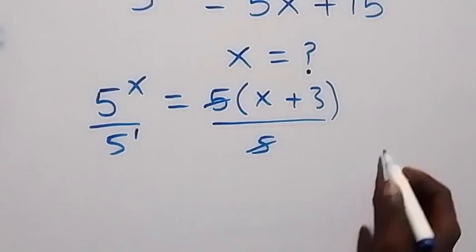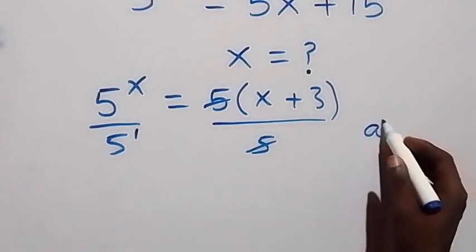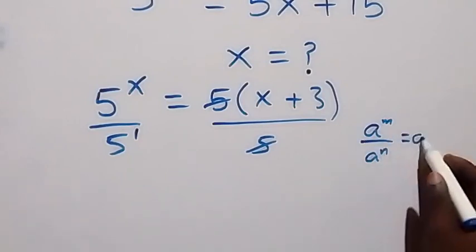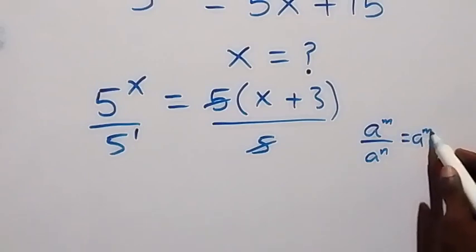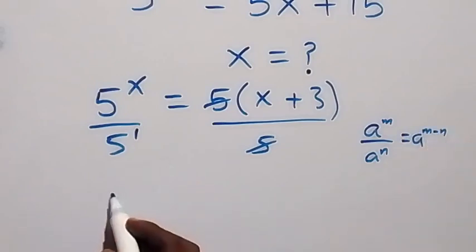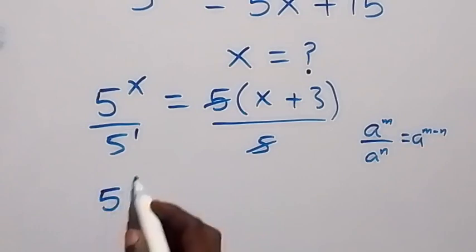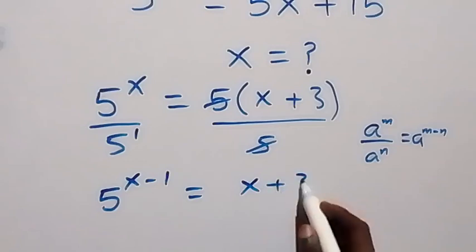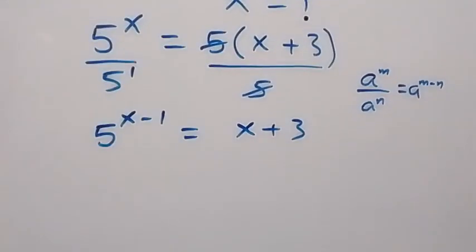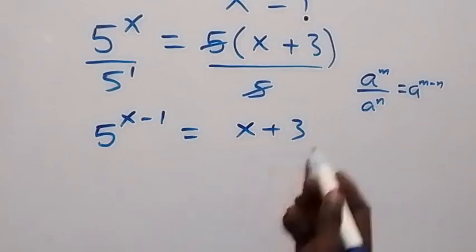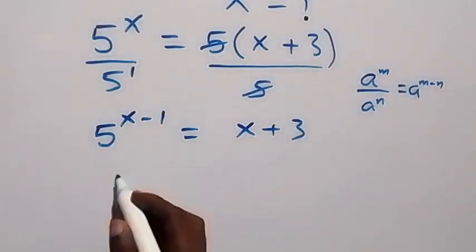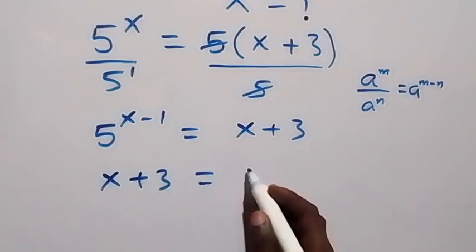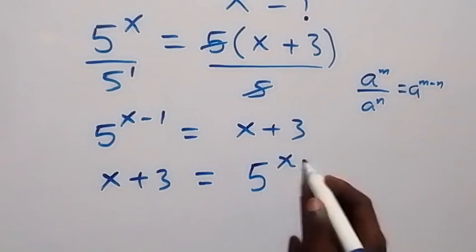Applying the law of indices: when we have a raised to power m over a raised to power n, this is the same thing as a raised to power m minus n. So here this becomes 5 raised to power x minus 1, now equals to x plus 3. In the same way we can write this side first and take this side here, so we have x plus 3 now equals to 5 raised to power x minus 1.